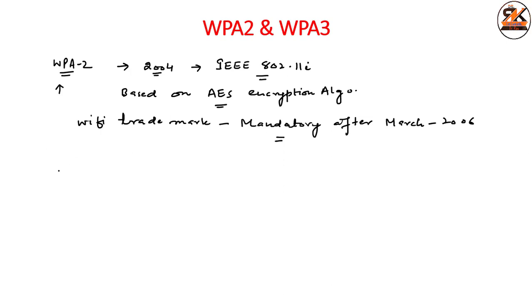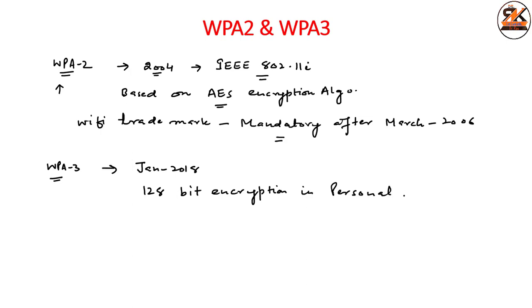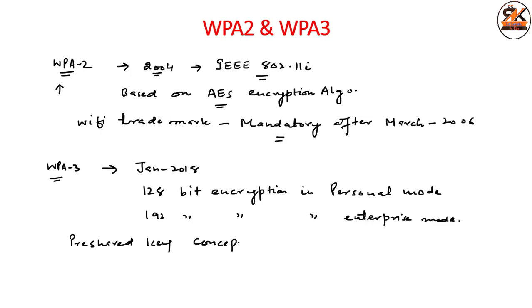Another version, WPA3, came as a replacement for WPA2 in January 2018. It is based on 128-bit encryption in personal mode and 192-bit encryption in enterprise mode. It replaces the pre-shared key concept of WPA2, and instead uses simultaneous authentication. This is all about the WPA, WPA2, and WPA3 standards. That's all for this lecture.